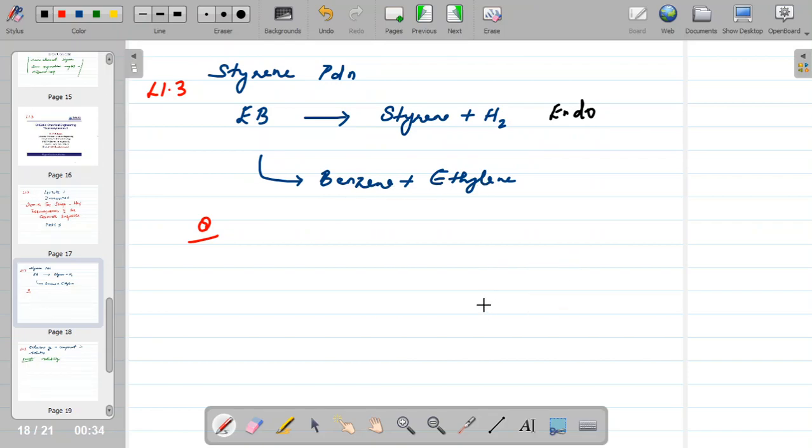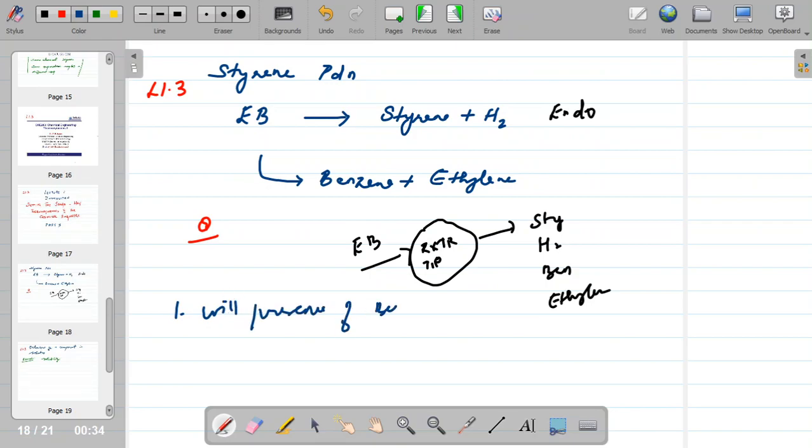One can think of a reactor system with ethyl benzene going inside at a temperature and pressure. You not only have styrene and hydrogen, but you can also expect benzene and ethylene as part of your exit stream. It is very obvious what questions one would ask if you have to design this process at the beginning.